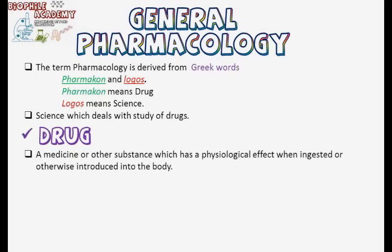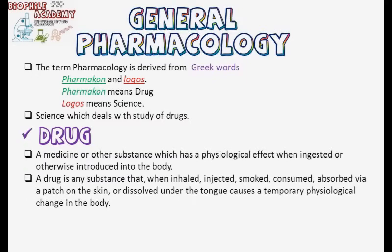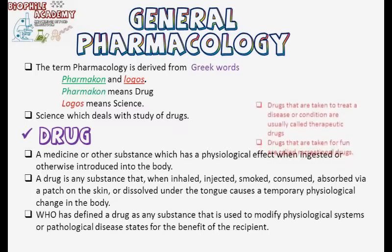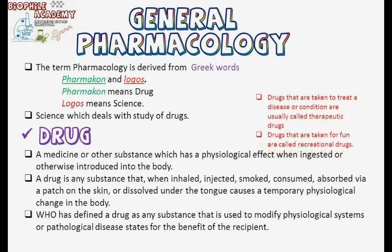Now let us know what is a drug. A drug can be defined as a medicine or other substance which has a physiological effect when ingested or otherwise introduced into the body. It can also be defined as any substance that when inhaled, injected, smoked, consumed, absorbed via a patch on skin, or dissolved under the tongue, causes a temporary physiological change in the body. The World Health Organization defined a drug as any substance that is used to modify physiological systems or pathological disease states for the benefit of the recipient. Drugs taken to treat a disease or condition are called therapeutic drugs; drugs taken for fun are called recreational drugs.